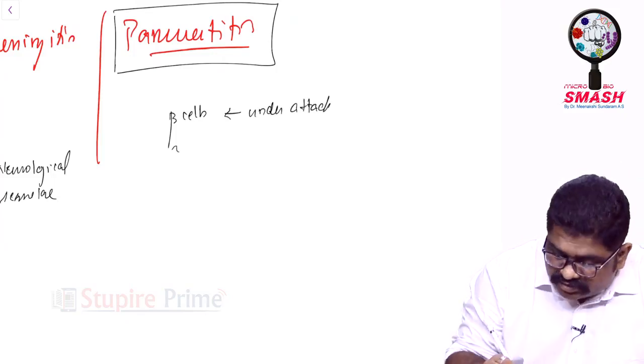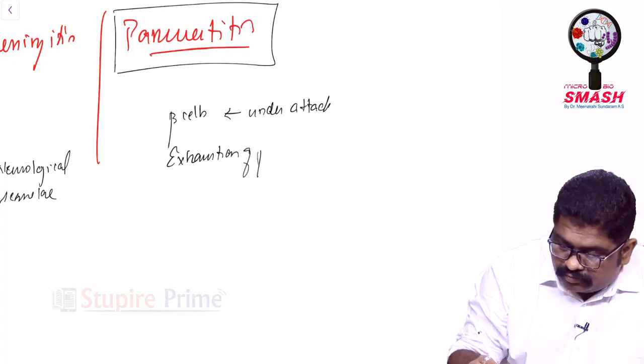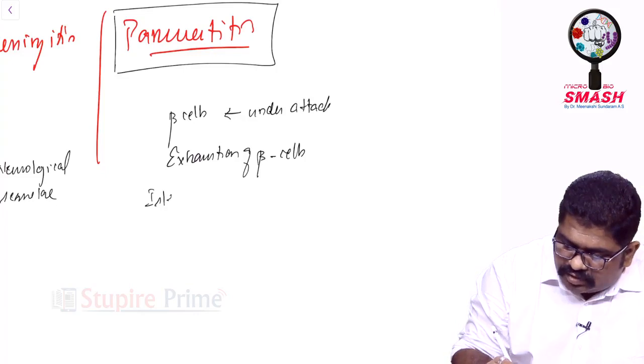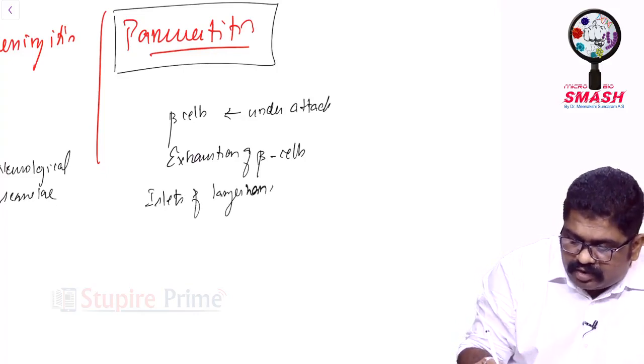What about pancreatitis? As you saw in measles, the beta cells of pancreas can be under attack, because of which you can have exhaustion of beta cells.